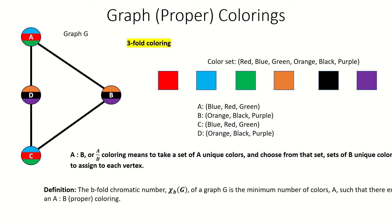The b-fold chromatic number of a graph, represented by chi sub b of g, is defined to be the minimum number of total colors, a, that you'd need in your palette so that you could assign sets of b colors to each vertex in the graph such that adjacent vertices share no colors in common. A b-fold coloring obviously requires at least b colors, but it might require many more, and whatever the minimum number we'd need for that given graph is, that's the b-fold chromatic number. In this case, we needed six colors to three-fold color our graph, so the three-fold chromatic number, written as chi sub 3 of this graph, is 6.